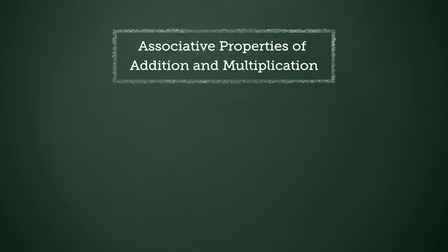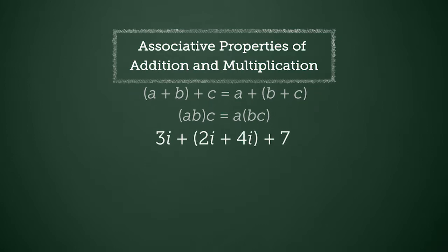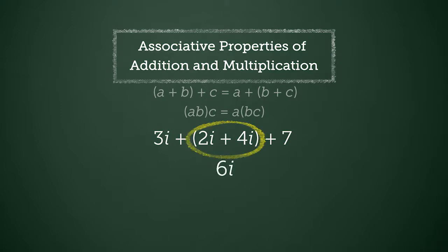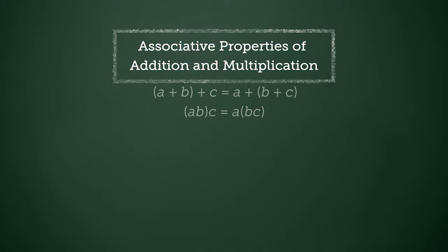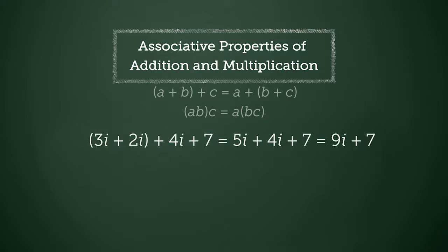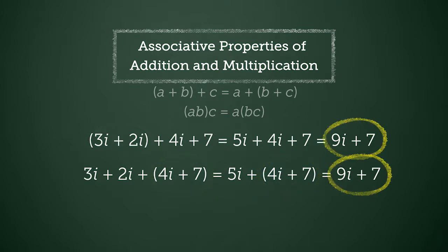The associative properties of addition and multiplication state that addends or factors can be added or multiplied in different groupings and will yield the same results. For example, the following expression indicates that the numbers in parentheses should be added first, resulting in 9i plus 7. However, the associative property allows for any of the addends to be added first. You can change the parentheses to encompass different numbers and still get the same solution of 9i plus 7.